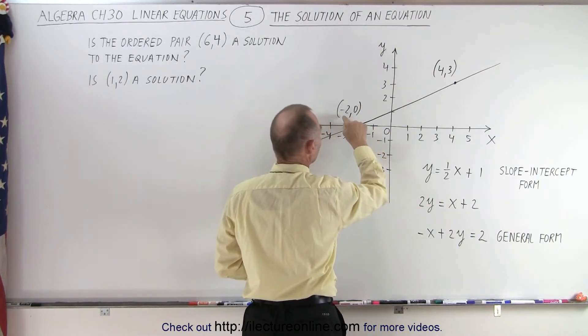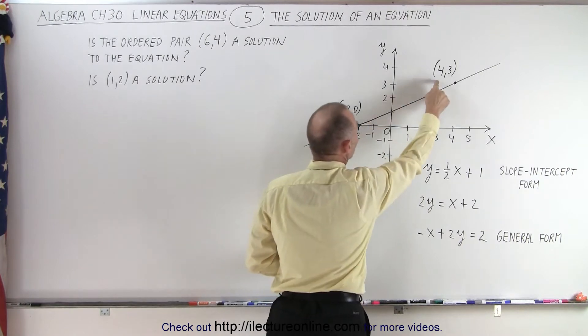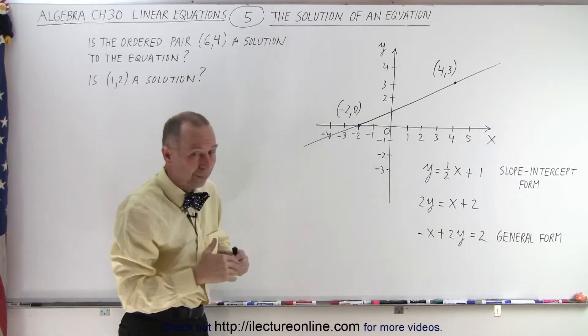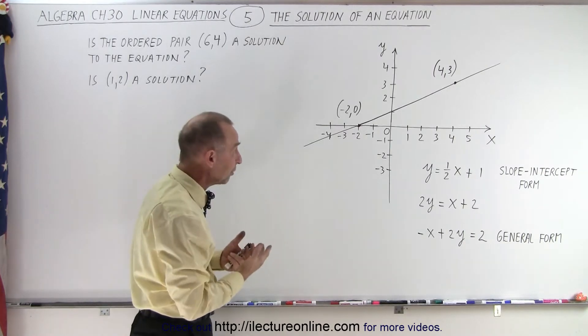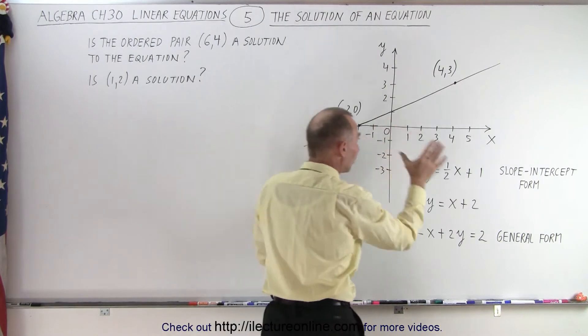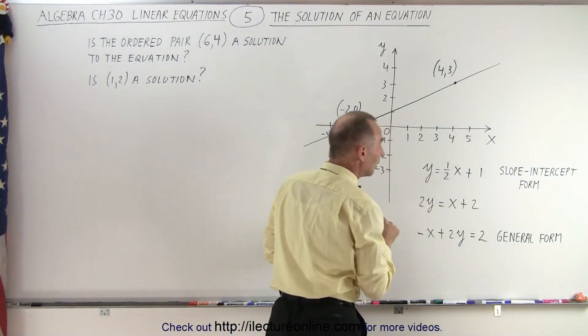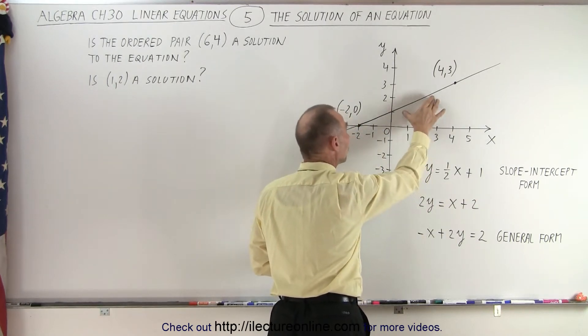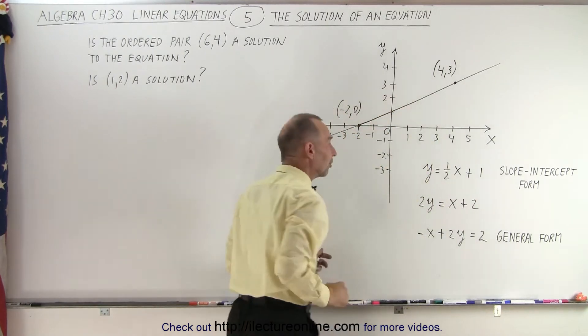Notice we have two ordered pairs on the coordinate system. Right here we have the ordered pair (-2, 0) and the ordered pair (4, 3). If I connect those two points, which are represented by the ordered pairs, I have a line. And then, if I find the equation of the line, which is what we have right here, then we have an equation of a line that represents this line, which is defined by those two ordered pairs.